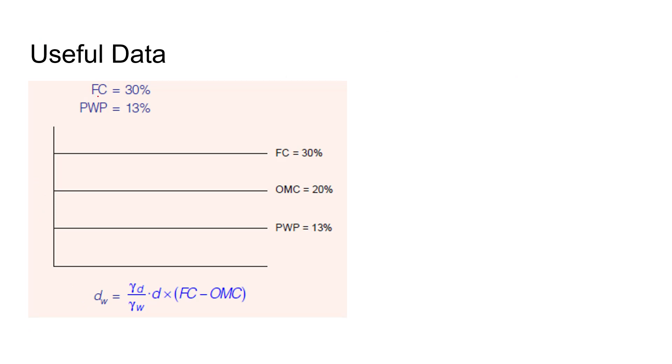Let's understand the data they have given. Field capacity 30 percent, permanent wilting point 13 percent, optimum moisture content 20 percent. Depth of irrigation water - this formula must be known to everyone in order to solve these questions. Let's put all the values given into this formula.